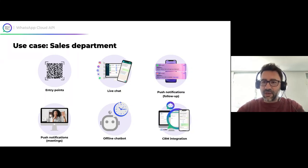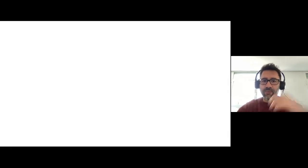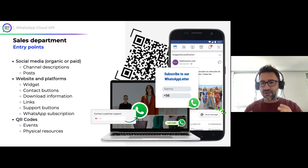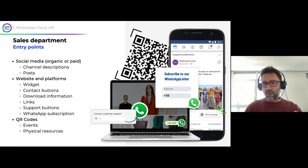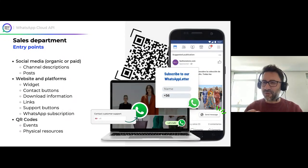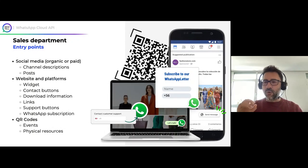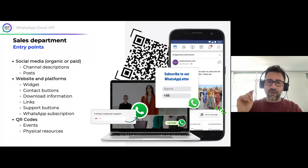When you start working with Wattel as a sales team, we suggest several entry point strategies. The first and best entry points are widgets you can add to your website. If you add a WhatsApp button on your website, this is a super simple widget. When the customer clicks on it, they go to the WhatsApp conversation and say hello — conversation started. You've opened the 24-hour conversation window and can start working with that client.